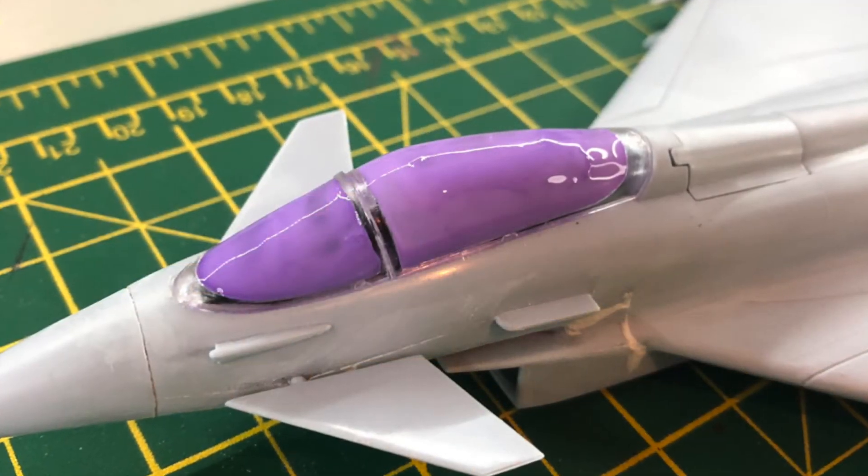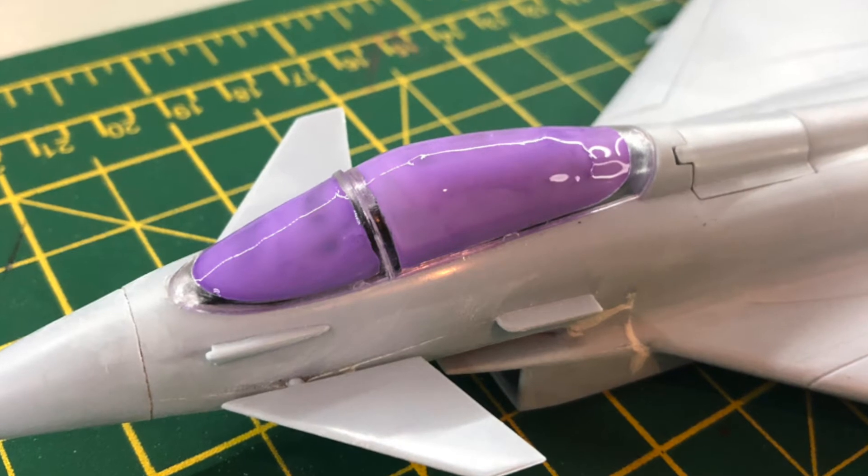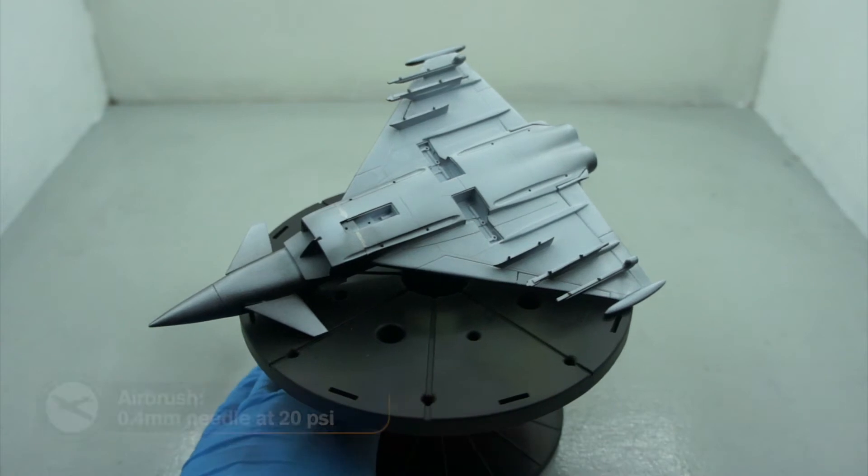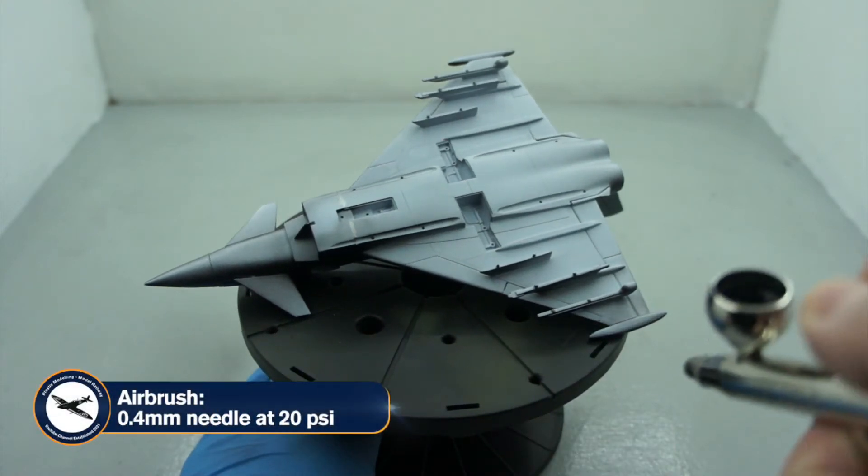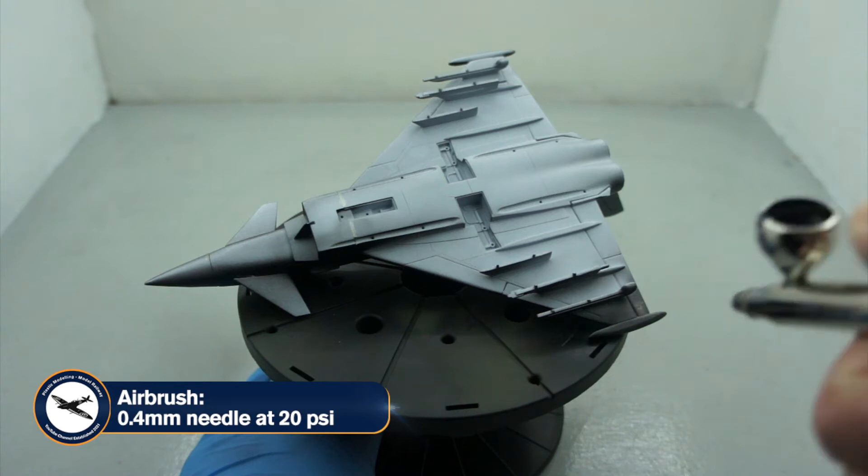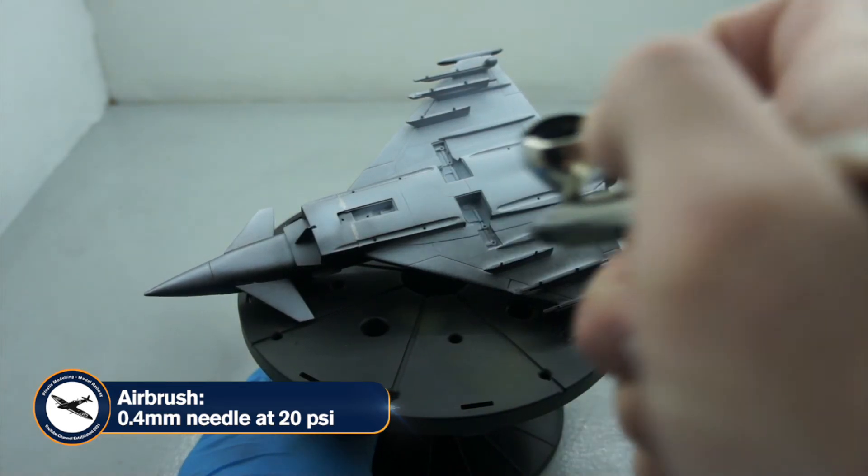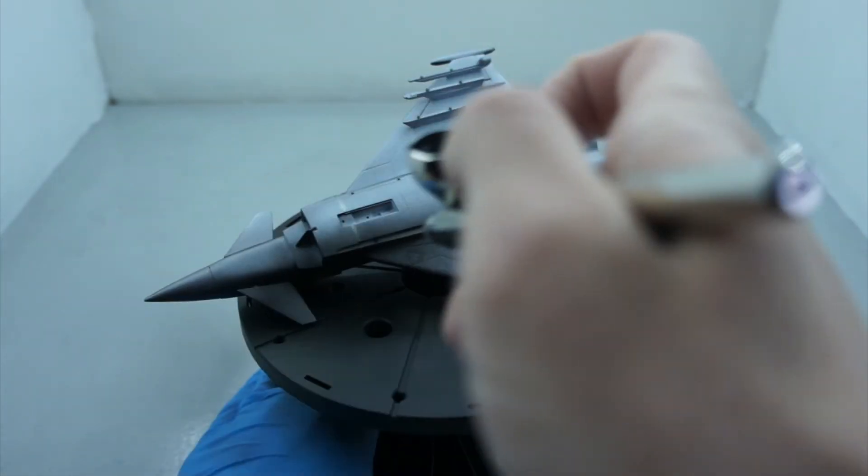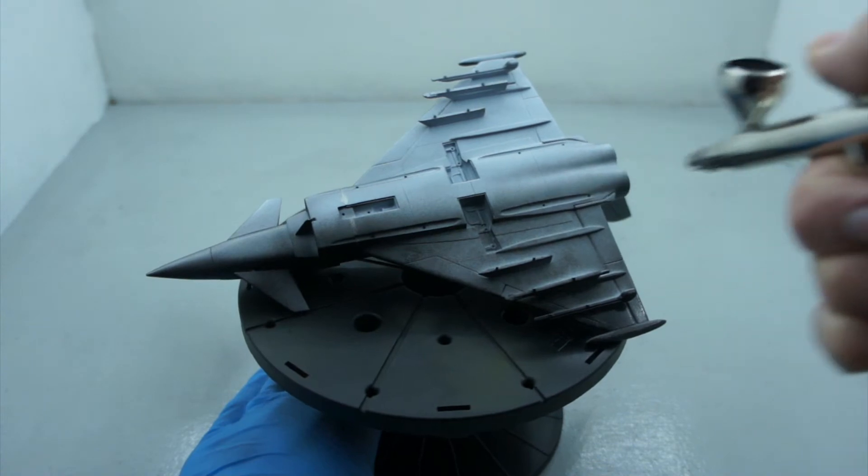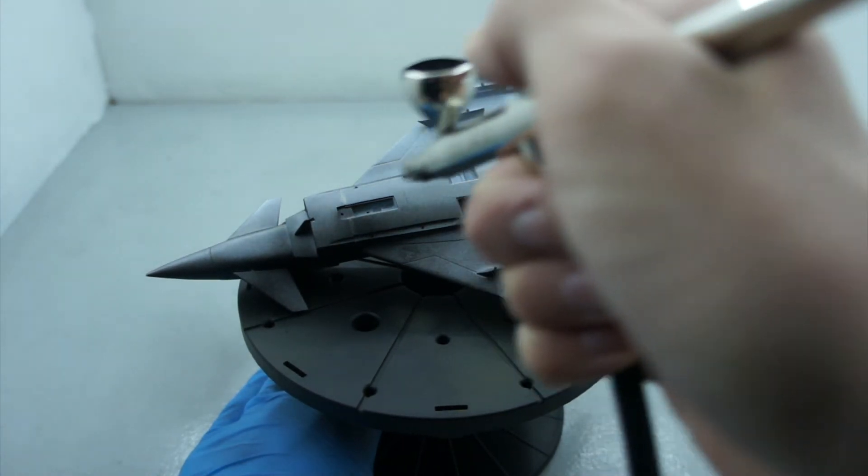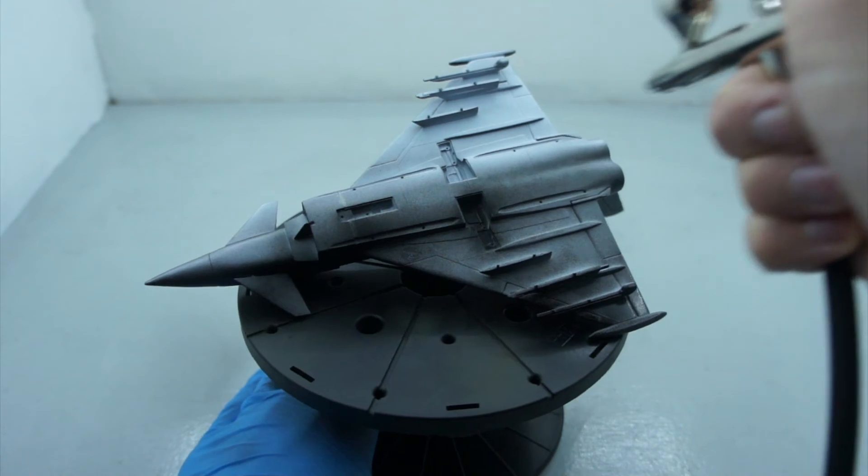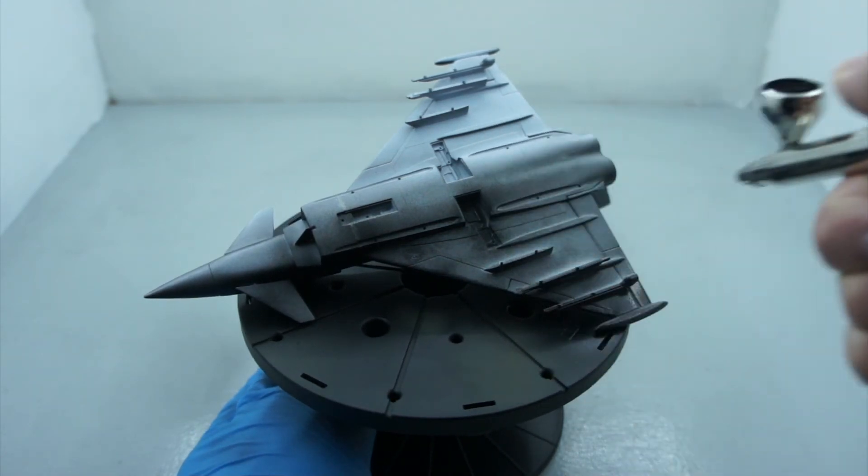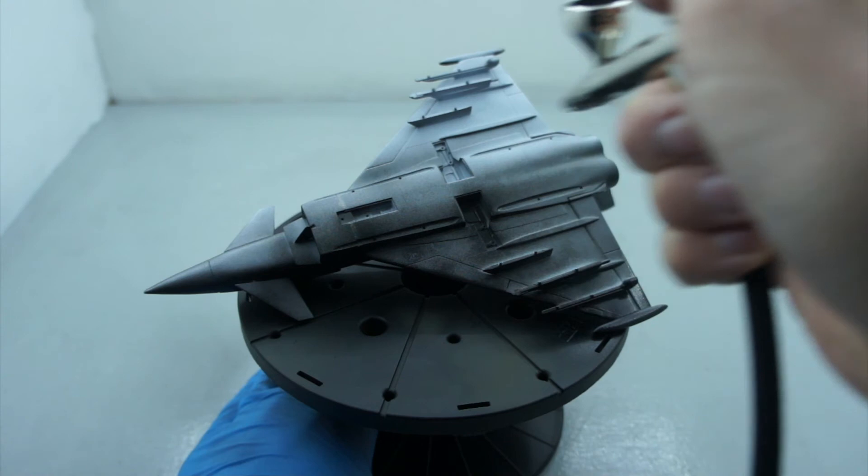Next came the priming. Again, I used the Vallejo black surface primer. Those eagle-eyed amongst you will notice I've already primed the top. This was a 0.4 millimeter needle set at 20 PSI with my new compressor and airbrush. I was really happy, however I did have a bit of a drama when I first applied the primer.